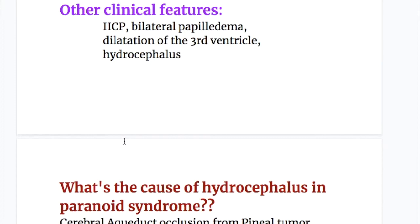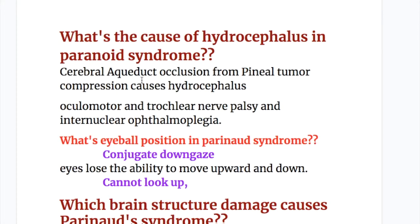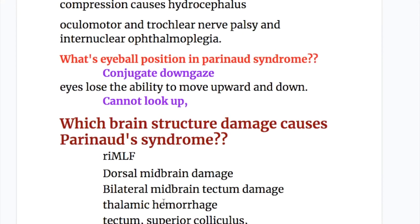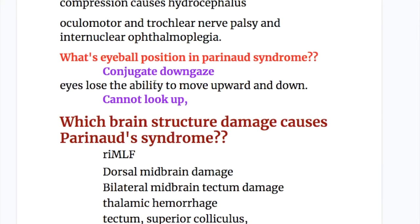Other clinical features of Parinaud syndrome include increased intracranial pressure, bilateral papilledema, dilatation of the third ventricle, and hydrocephalus. Hydrocephalus is caused by cerebral aqueduct occlusion from pineal tumor compression. Oculomotor and trochlear palsy and internuclear ophthalmoplegia also occur. The eyeball position is conjugate downward gaze, with loss of ability to move upward and downward — the patient cannot look up.